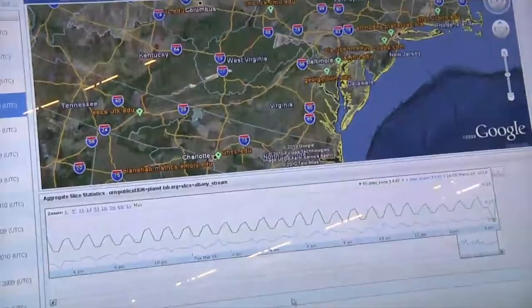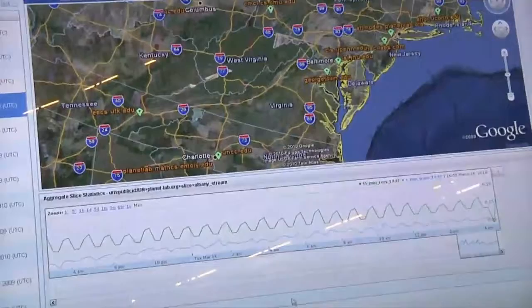We can also click down here at the bottom and get some additional data. So this is an aggregate set of statistics for the slice. We're looking at 15 minute receive and transmit traffic.